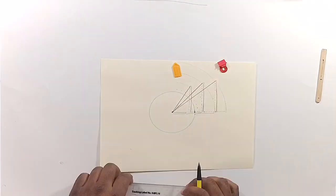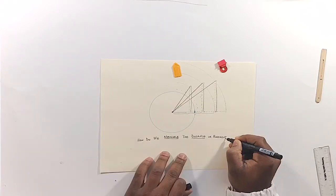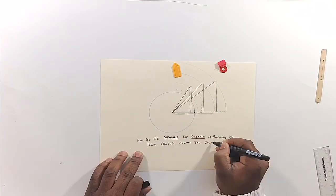In other words, the longer the distance, the longer it takes to go around the circle. But how do we measure the movement or distance of these objects around the circle?